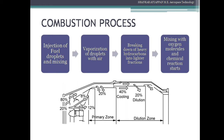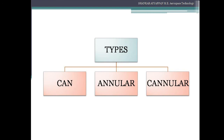The combustion chambers used in gas turbine engines are classified into three different types: the first one is can, the second one is annular, and the third one is cannular. These three types are classified based on their shape and configurations. Now we are going to discuss about these three types in detail.